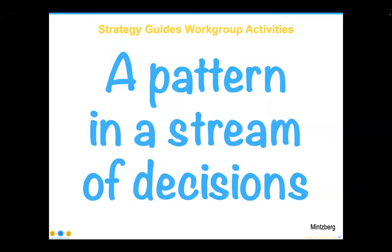Let's move now to the idea of strategy. Strategy guides work group activities — it is one thing that a work group shares: a similar shared understanding of what the organizational priorities are. While you'll see lots of books on strategy, the word strategy originated in the military. Business consultants picked up on it and made lots of PowerPoints around it. I see many organizations with 100-page data strategies that simply sit on a shelf and are not useful. If we look at the military context, strategy is a pattern in a stream of decisions — so that at the knowledge worker level, which is where your data is managed, they understand the right thing to do.